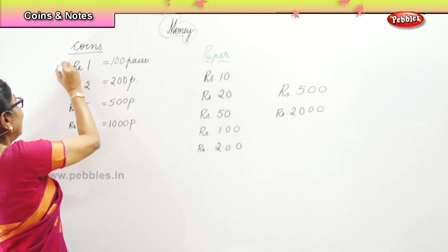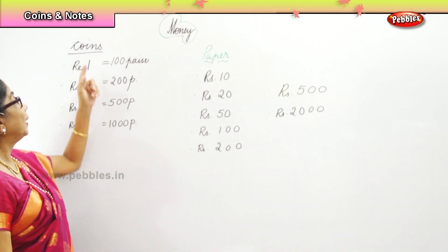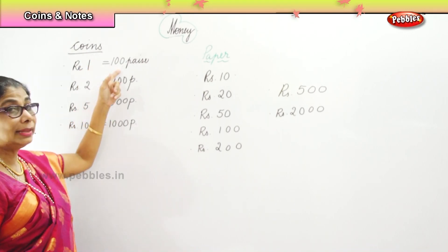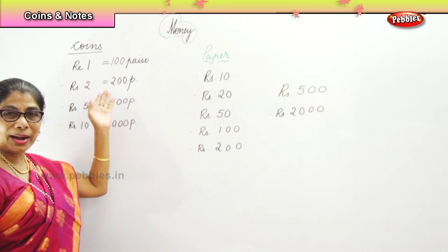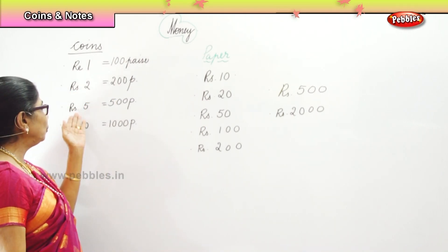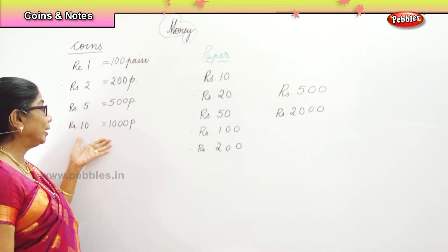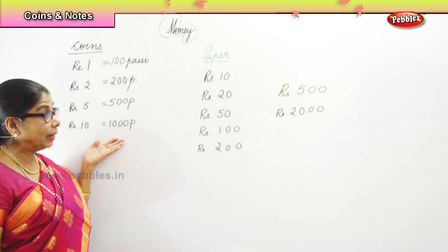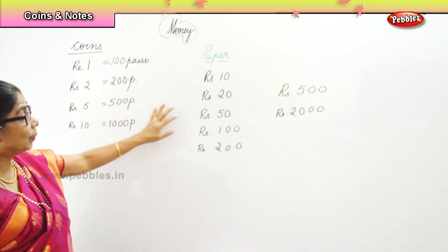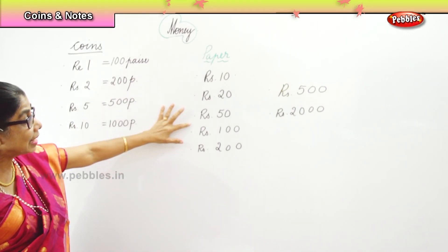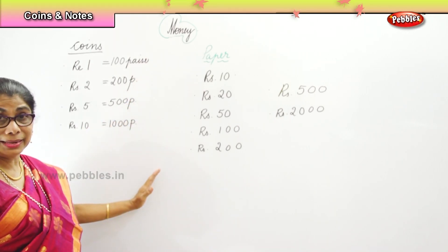And we have four coins. In coins we have one rupee — that is hundred paisa. We have two rupee coins — that is two hundred paisa. In the five rupee coin you get five hundred paisa. And in the ten rupee coin there is one thousand paisa. So we have four coins and seven paper currency in Indian money.